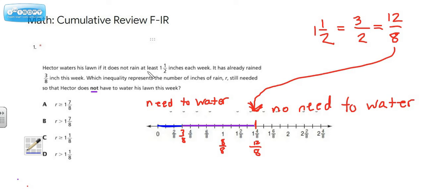Hector waters his lawn if it does not rain at least one and a half inches each week. It has already rained three-eighths of an inch this week. Which inequality represents the number of inches of rain are still needed so that Hector does not have to water his lawn this week?